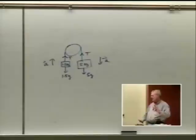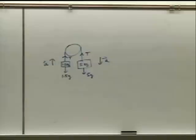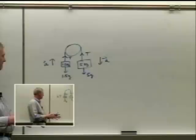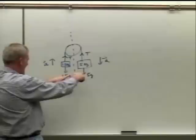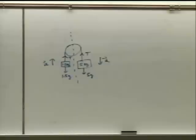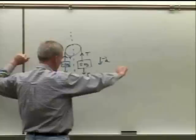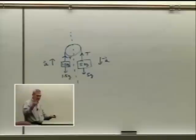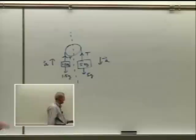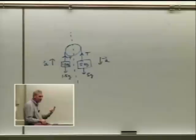For the 1.5-kilogram mass: sum of y-forces equals T minus 1.5g equals 1.5 times a. I don't know T and I don't know a, so I can't solve it yet. For the 5-kilogram mass: sum of y-forces equals T minus 5g equals negative 5a — negative because it's accelerating downward.